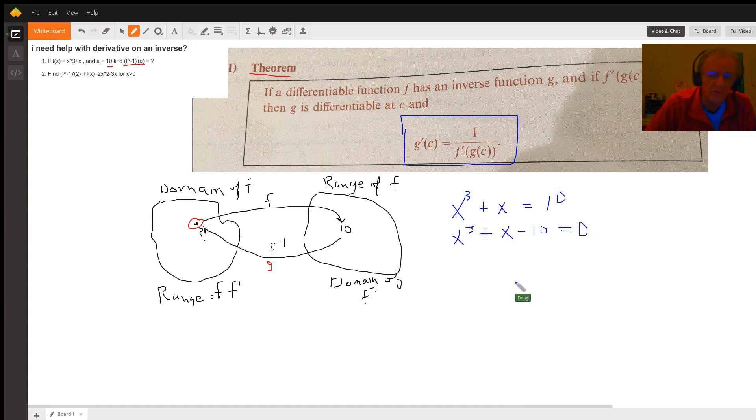Talk about the rational root theorem, synthetic division, but a quick inspection leads to the fact that x equals 2 is the solution, because 2 cubed is 8, 8 plus 2 is 10, 10 minus 10 is zero. So this is the one number in the domain of f that maps to 10.